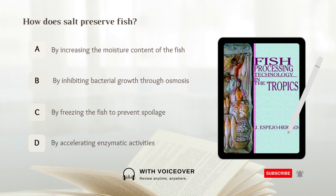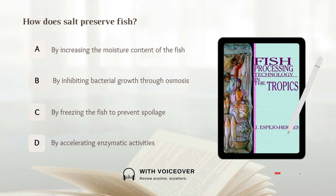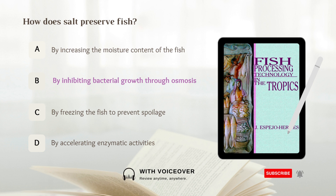How does salt preserve fish? A. By increasing the moisture content of the fish. B. By inhibiting bacterial growth through osmosis. C. By freezing the fish to prevent spoilage. D. By accelerating enzymatic activities. Answer: B. By inhibiting bacterial growth through osmosis.